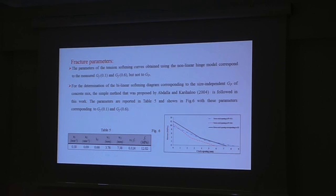For obtaining the bilinear parameters, the softening diagram corresponding to the size-independent fracture energy of Cardiff-C Mix, the simplified method proposed by Abdulla and Khorami 2004 was used in this work, and the parameters are tabulated in Table 5 and shown in Figure 6, with these parameters now obtained from the 10 and 60mm notch.